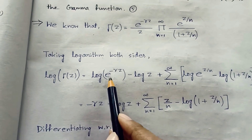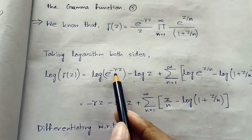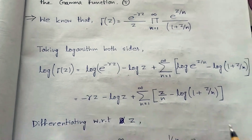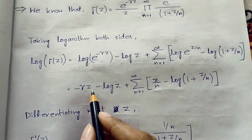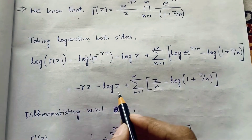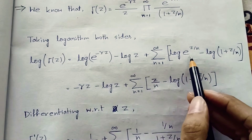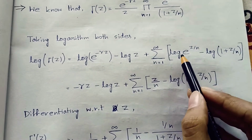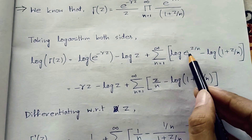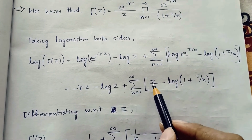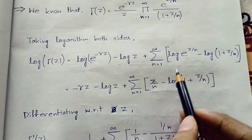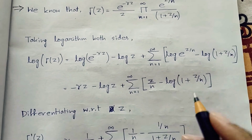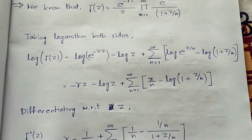Since this is log base e, the term −γz comes out directly, so we get −γz − log(z). The log(e^(z/n)) simplifies to just z/n since this is also log base e. Now we differentiate both sides.